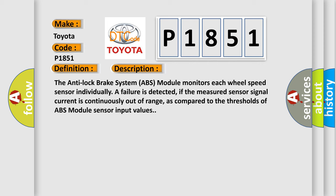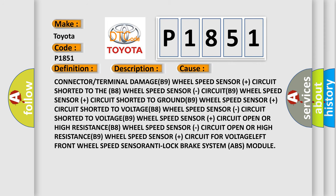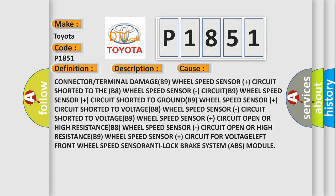This diagnostic error occurs most often in these cases: connector or terminal damage; B9 wheel speed sensor plus circuit shorted to the B8 wheel speed sensor circuit; B9 wheel speed sensor plus circuit shorted to ground; B9 wheel speed sensor plus circuit shorted to voltage; B8 wheel speed sensor circuit open or high resistance; B9 wheel speed sensor plus circuit for voltage — left front wheel speed sensor or ABS module.